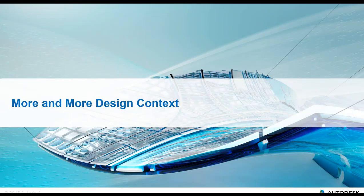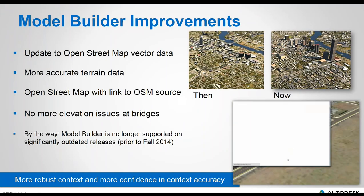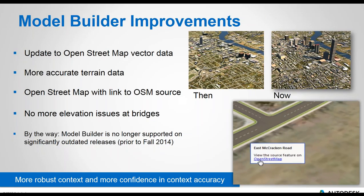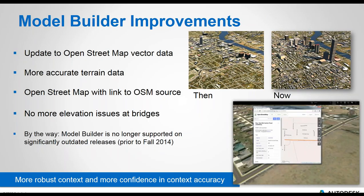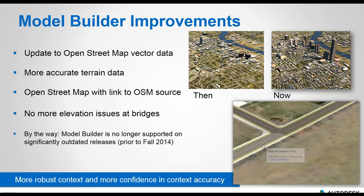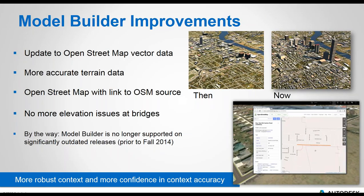Moving on to the design context components of the update. There have been major improvements to Model Builder with updated OpenStreetMaps data — information available is more detailed and accurate. You can see the difference between older versions and the latest, with greatly improved level of detail. There are also improvements in terrain data with background processing changes providing more accurate details. You also have the ability to link into OpenStreetMaps data and see the websites holding that data, including when it was created.